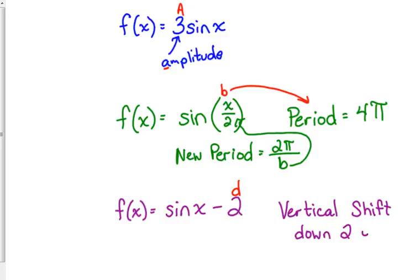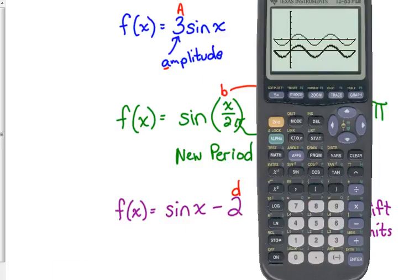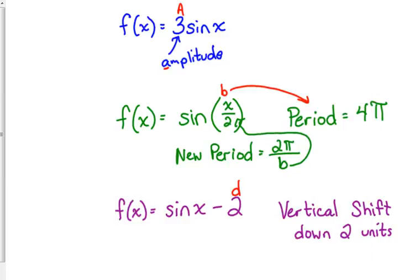We're not stretching it out, we're not changing it horizontally, we didn't do anything to its period — we just shifted the entire thing down two units. It's still the same height, just in a different location. So those are the three things you need to be familiar with. You can have any combination of these pieces, but you just have to recognize which one affects what.